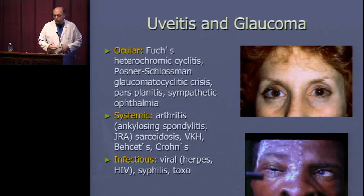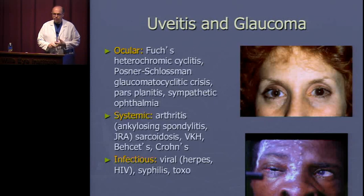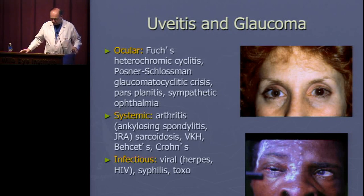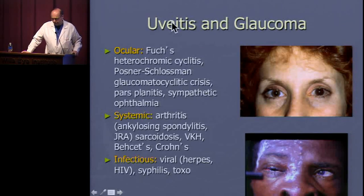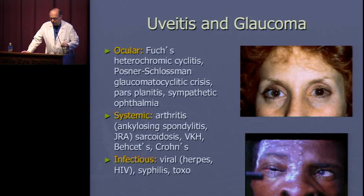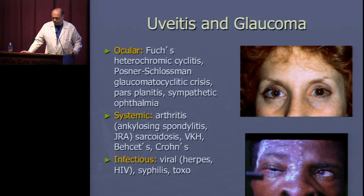Inflammatory disease causing secondary angle closure is quite common. Ocular conditions include Fuchs heterochromic cyclitis, Posner-Schlossman (glaucomatocyclitic crisis), pars planitis, and sympathetic ophthalmia. Systemic causes include ankylosing spondylitis, juvenile rheumatoid arthritis, sarcoidosis; less commonly VKH, Behçet's, and Crohn's disease leading to uveitis and secondary glaucoma. Infectious etiologies include herpes, HIV, syphilis, and toxoplasmosis.